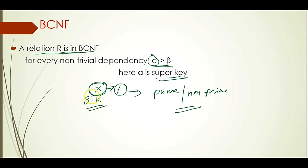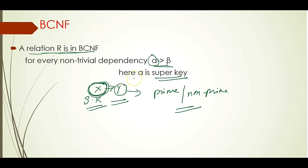Only X must be a super key. What exactly is a super key? A super key is a set of attributes used to find a particular record from the database table. So a relation contains a functional dependency X derives Y, and X must be a super key. We are not concerned with whether Y is a prime or non-prime attribute. If this condition is satisfied in a relation, then we can say that relation is in BCNF.